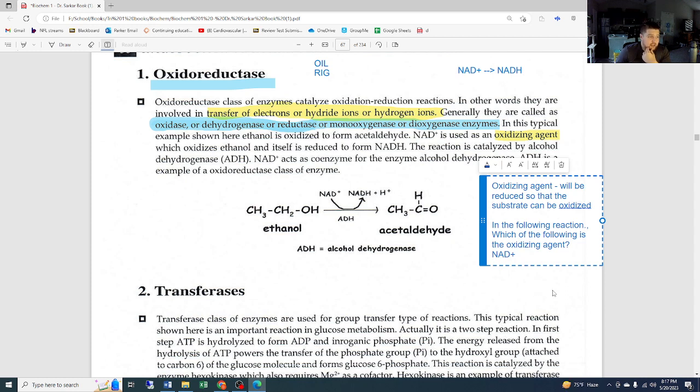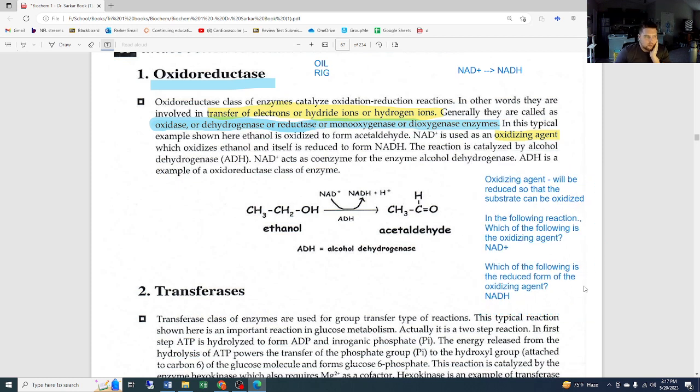Same thing if it was FAD+ and between FAD+ and FADH. You could have the same question: in the following reaction, which of the following is the oxidizing agent? NAD+. But you could also have the question: which of the following is the reduced form of the oxidizing agent? Now our answer is NADH because it is now in the reduced form.